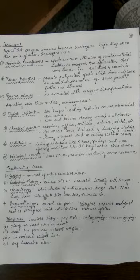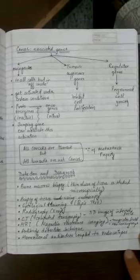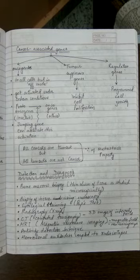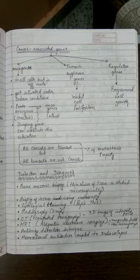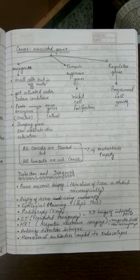The detection and diagnosis of cancer can be done with the help of biopsy, in which histopathological tests are conducted. Thin slices of tissue are taken and examined with the help of endoscopy. Cytological staining and radiography are also used. CT and MRI are mentioned in the NCERT. In CT, a 3D image of internal parts is developed to detect cancerous growth. In MRI, magnetic fields and non-ionizing rays are used for cancer detection.